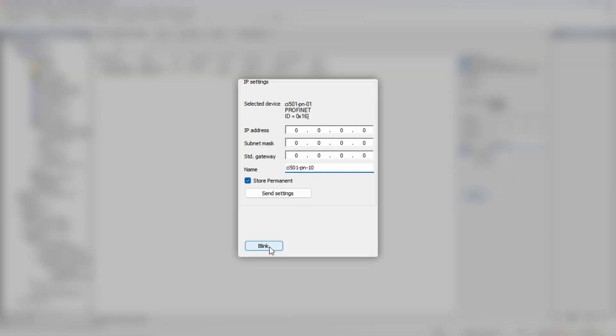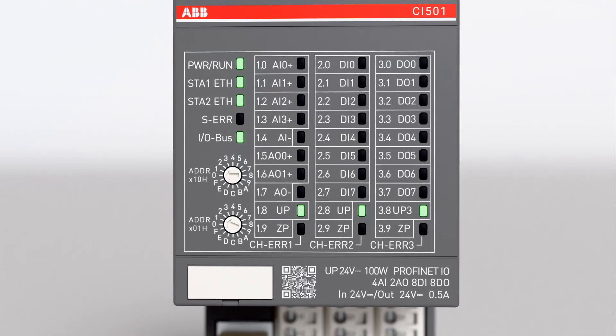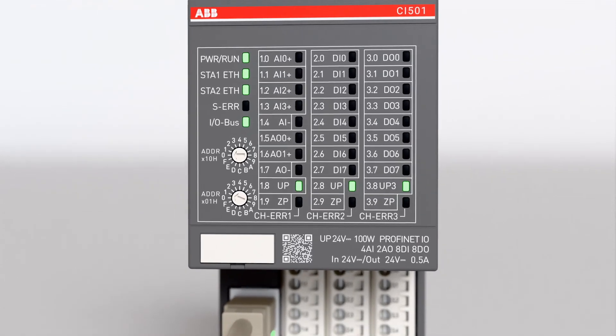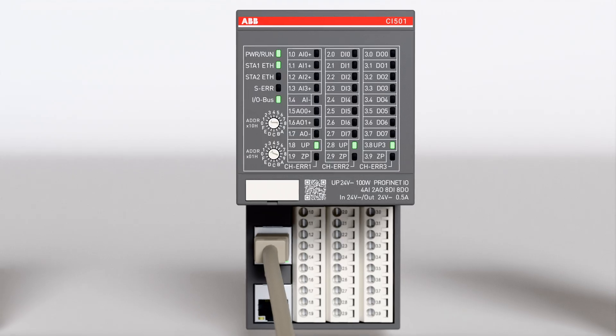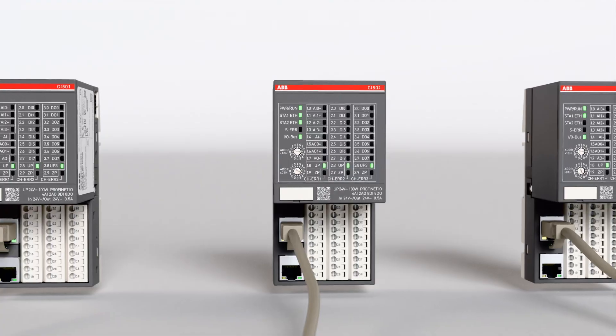On one hand, with IP configuration tool you can give device whatever name you want. On other, with rotary switches you don't need any tools in the first place, which makes replacement process way easier. And to finish with IP config tool, I'd like to draw your attention to this lonely blink button, which does exactly what it says: make STA2 LED on CI501 device blink three times. This could be useful if you have lots of devices and you want to locate the device you work with visually.